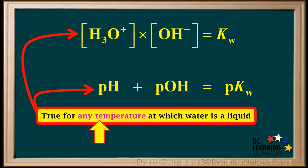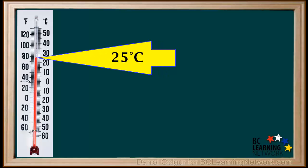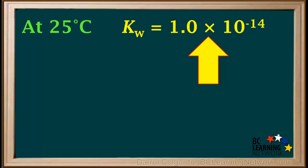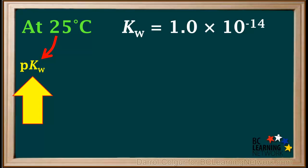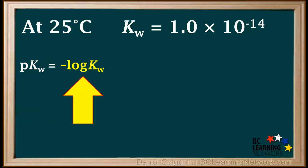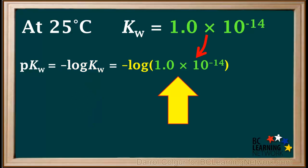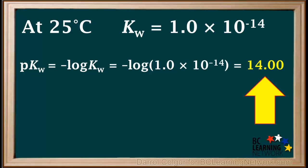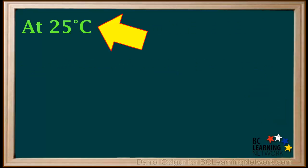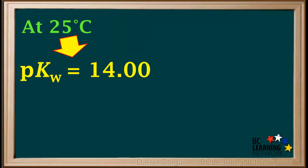Both of these equations are true for any temperature at which water is a liquid. Now we'll zoom in to a temperature of 25 degrees Celsius. At 25 degrees Celsius, Kw is equal to 1 times 10 to the negative 14th. So at 25 degrees Celsius, the pKw — which is the negative log of Kw — is the negative log of 1 times 10 to the negative 14th, which is equal to 14.